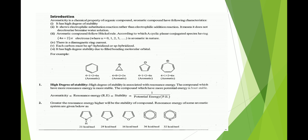The first characteristic of an aromatic compound is that it has a high degree of stability. It shows electrophilic substitution reaction rather than electrophilic addition reaction. It should follow Hückel's rule. Hückel's rule states that a cyclic planar conjugated species having 4n+2 pi electrons, where n equals 0, 1, 2, 3, etc., is aromatic in nature.